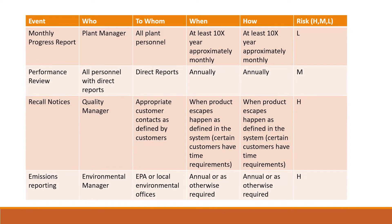Here are some examples of required communications: a monthly progress report given by the plant manager, a performance review given by everybody with direct reports, recall notices given by the quality manager when a product escapes — which you hope doesn't happen — and emissions reporting by the environmental manager.